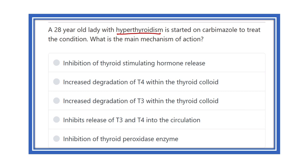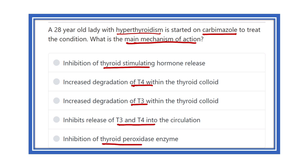This is a direct question about the mechanism of action of carbimazole. The options are: inhibition of thyroid stimulating hormone, increased degradation of T4, increased degradation of T3, inhibits release of T3 and T4 in the circulation, or inhibition of the thyroid peroxidase enzyme. We have to find out the correct mechanism of action.